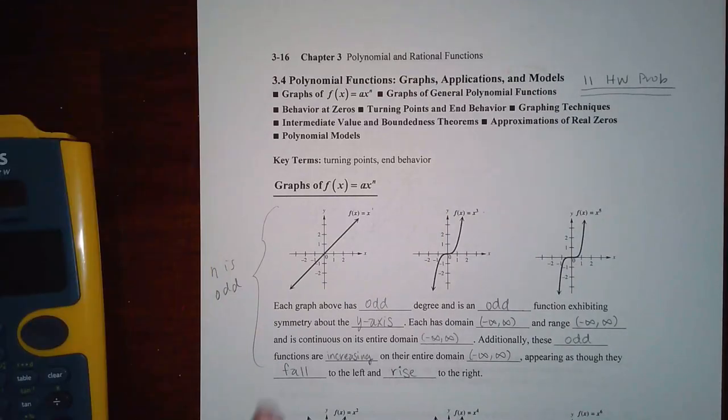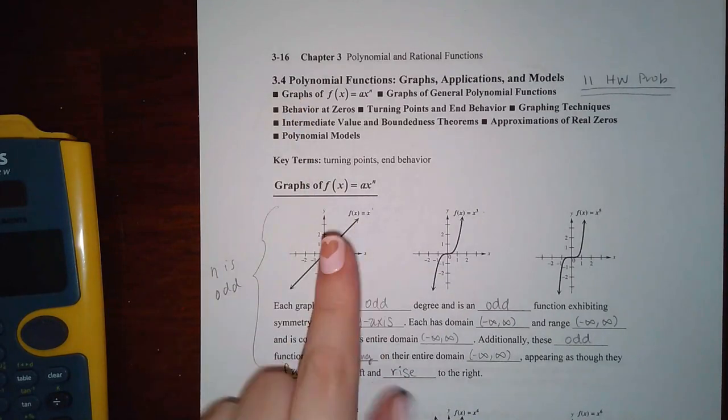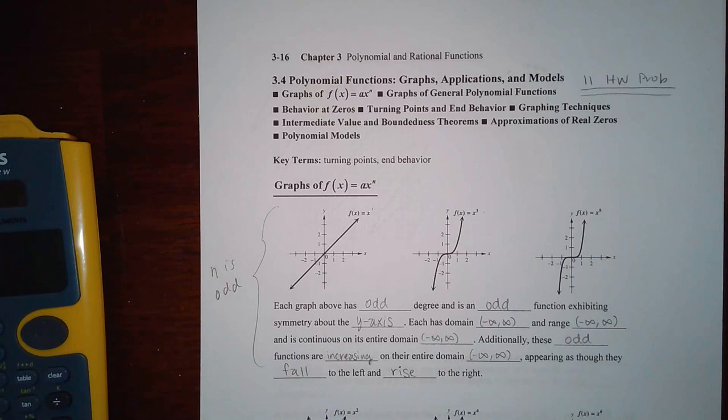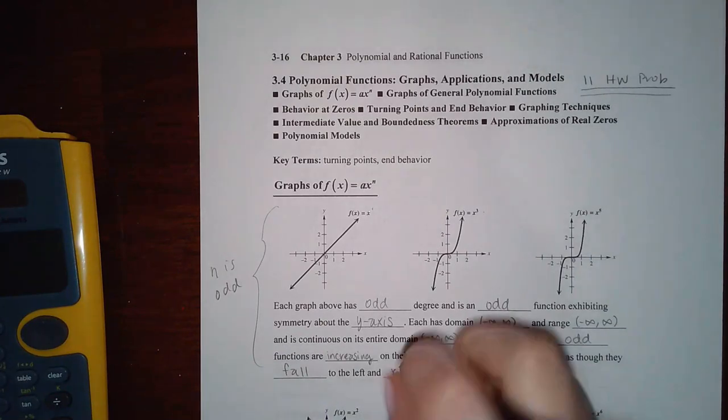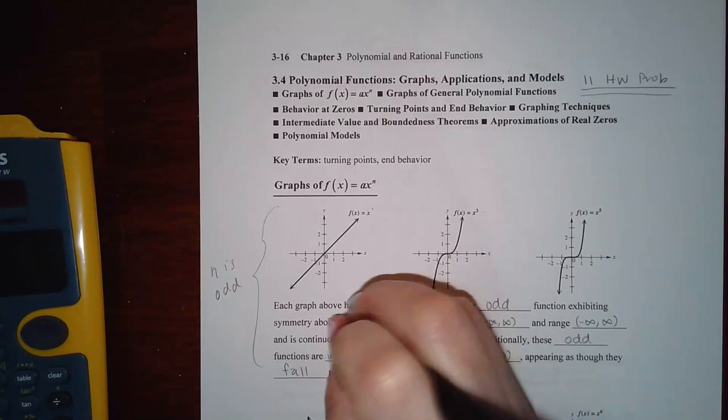Okay, the graph above has odd degree and is an odd function exhibiting symmetry about the y-axis. So here's the y-axis and it has symmetry. Oh, it's not supposed to be y-axis. It's supposed to be symmetry about the origin.